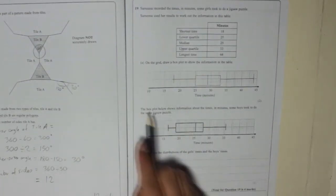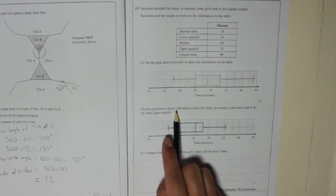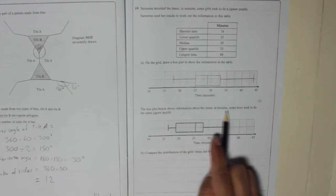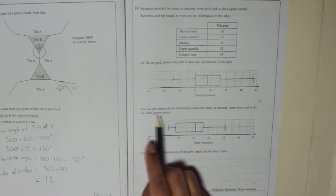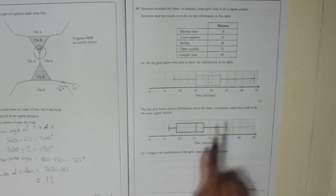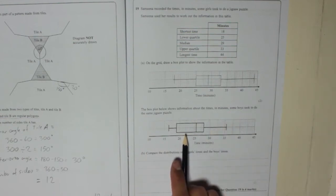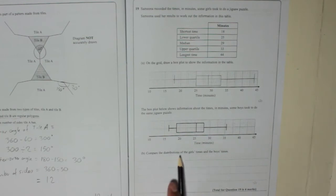So that's part A. The box plot below shows information about the times in minutes some boys took to do the same jigsaw puzzle. So it's boys this time, and there's the box plot of theirs. Part B. Compare the distributions of the girls' times and the boys' times. Two marks.